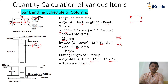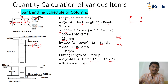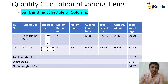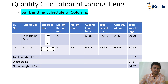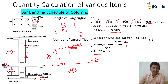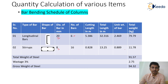Now we put everything into the bar bending schedule format — represented here in a table. The columns are: type of bar, shape, diameter, number of bars, and cutting length. Longitudinal bars: 20 mm dia, 6 numbers, cutting length 5.386 m. Lateral ties: 8 mm dia, 16 numbers, cutting length 0.828 m.